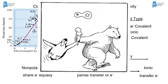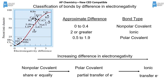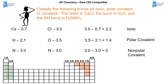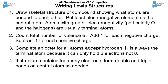Students should be able to make those decisions because they know the trends of electronegativity on the periodic table. Given electronegativity values, they ought to be able to determine whether something is ionic, polar covalent, or non-polar covalent. There is no single way to write Lewis structures — you need to find the method that works for you.